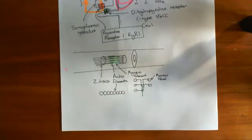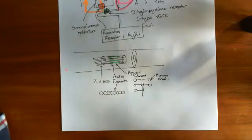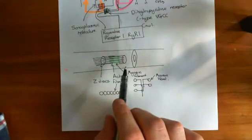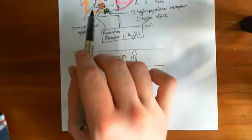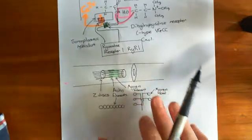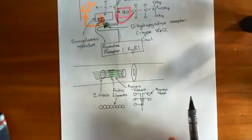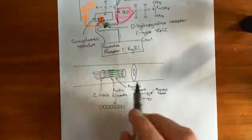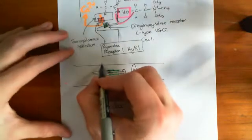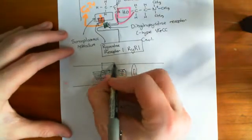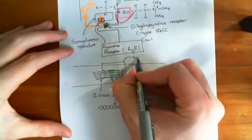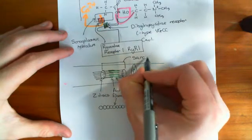We are in the process of discussing how contraction actually happens and how calcium rising within the cytoplasm of a myofibril leads to the contraction of the sarcomere. This contractile structure here is known as a sarcomere.